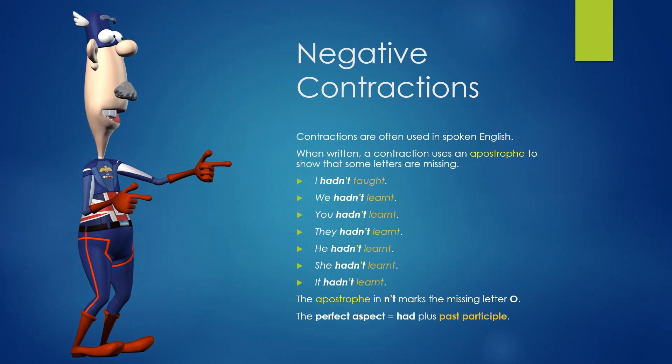Negative Contractions. Contractions are often used in spoken English. When written, a contraction uses an apostrophe to show that some letters are missing. I hadn't taught. We hadn't learnt. You hadn't learnt. They hadn't learnt. He hadn't learnt. She hadn't learnt. It hadn't learnt. The apostrophe in N'T marks the missing letter O. The perfect aspect is had plus past participle.